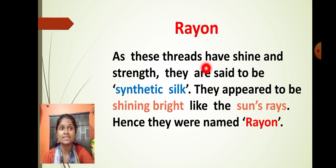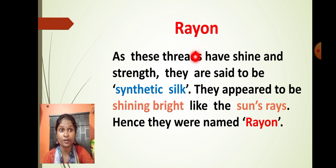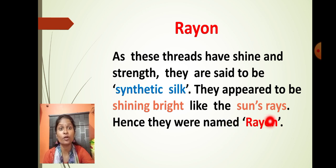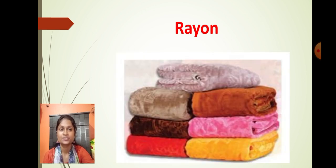Rayon threads have shine and strength, so they are said to be synthetic silk. We call them rayon because they appear to be shining very bright, like the sun's rays. That is why we call them rayon — because they shine bright like sunrays. This is how rayon cloth looks.